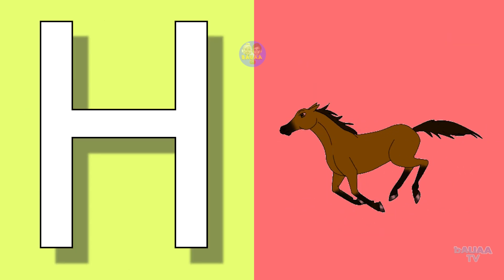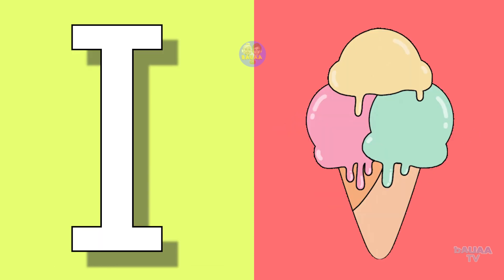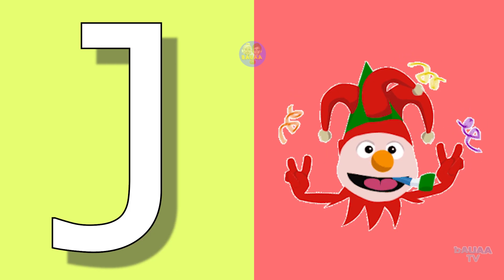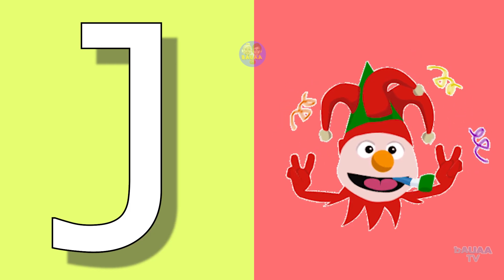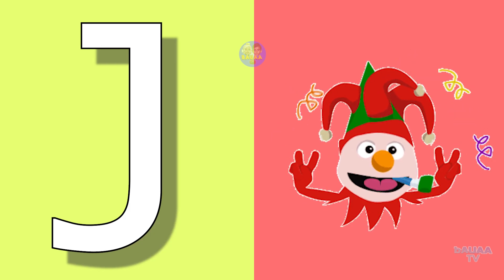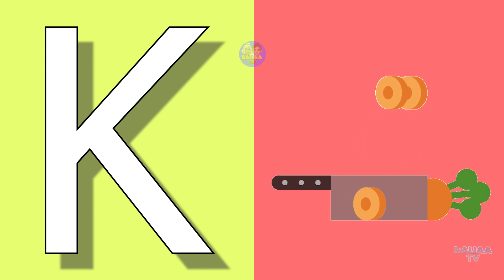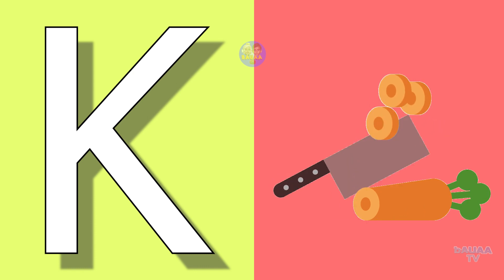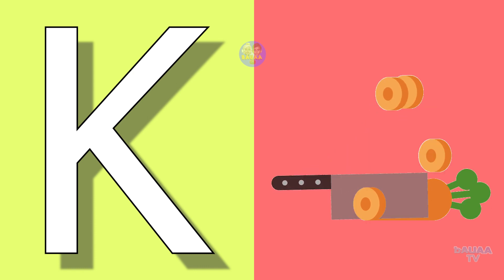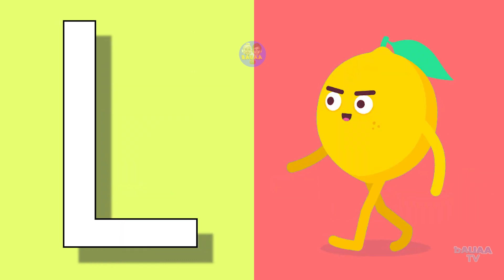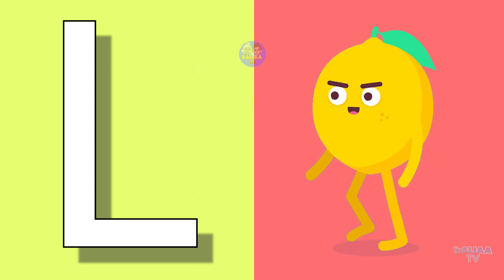H for horse, horse means ghoda. I for ice cream, ice cream means ice cream. J for joker, joker means joker. K for knife, knife means chaku.